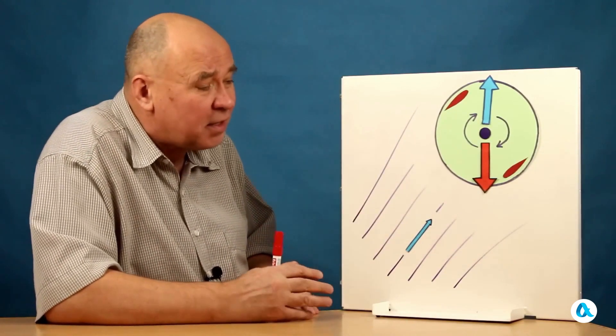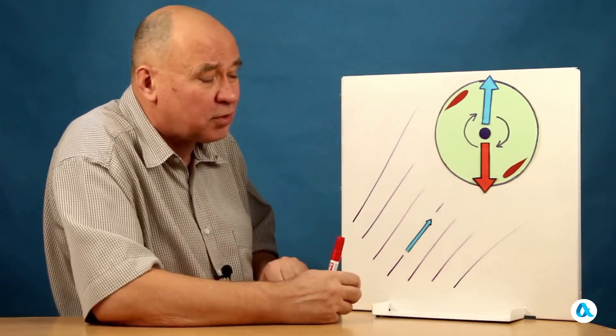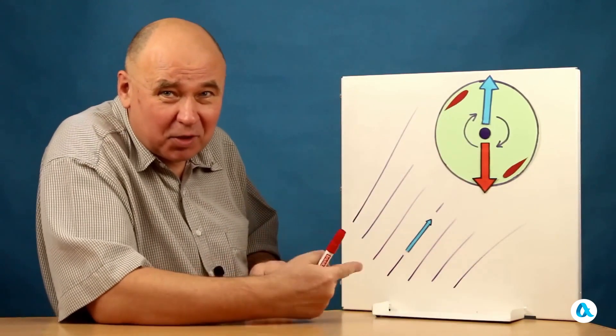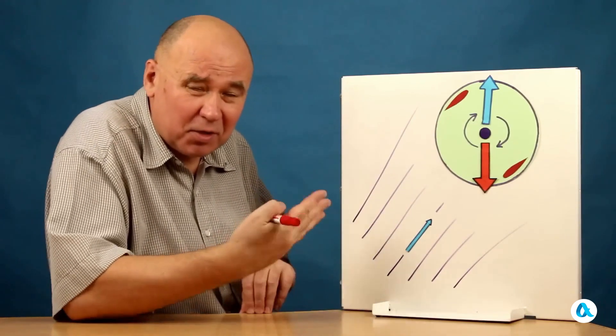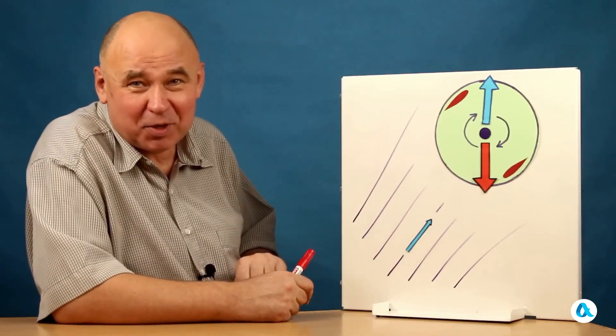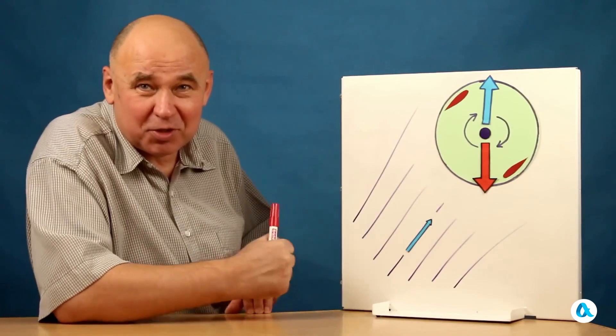And again, this flow that hits the rotor makes it rotate, first accelerating it, and then maintaining a constant speed. We need to understand how this happens, and what causes it.